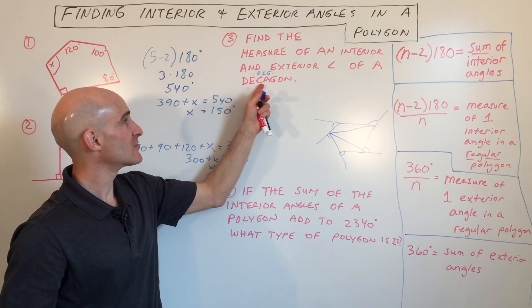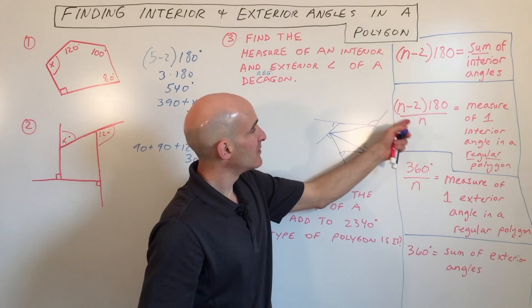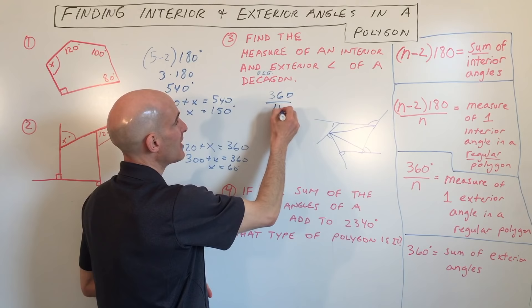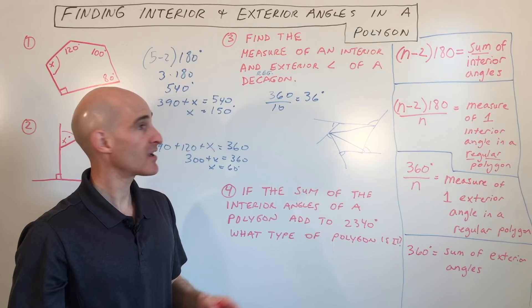So there's a couple different ways to do this. We can either use this formula here, or we could use this formula here. I'm going to use this one here. It's going to be a little bit easier since it's a regular decagon. So I'm just going to take 360 divided by 10, that equals 36 degrees. So each of the exterior angles of that decagon will be 36 degrees.